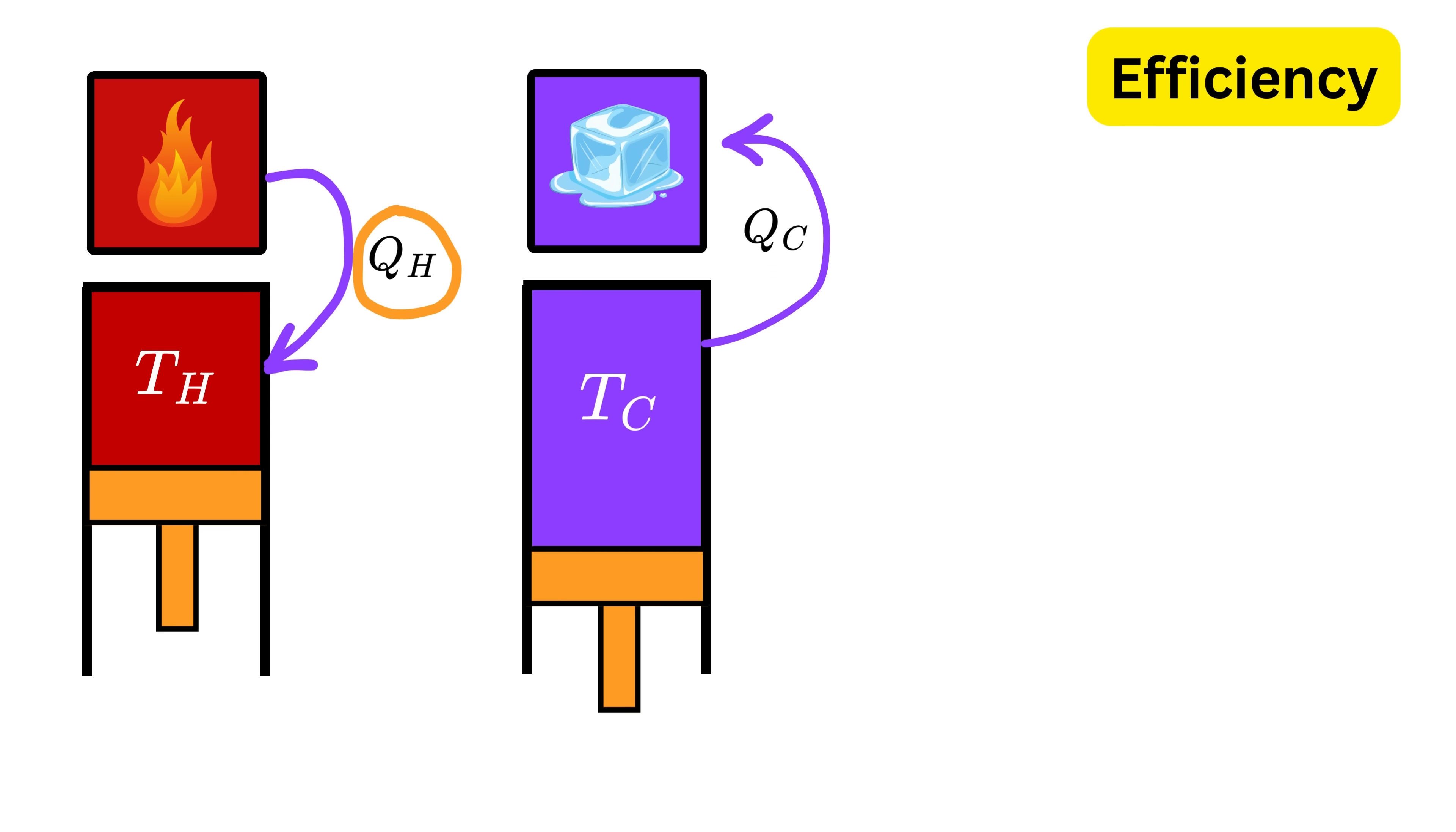Not all of the absorbed heat can be turned into useful work because some part must always flow out to the colder side. This means that the useful work done in one complete cycle in moving the piston in and out is simply the difference Q_h minus Q_c. Now when we talk about efficiency, what we really mean is: out of the total heat you put in, how much actually comes out as useful work?